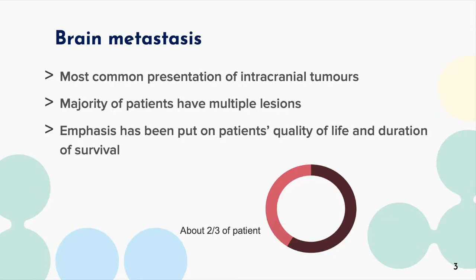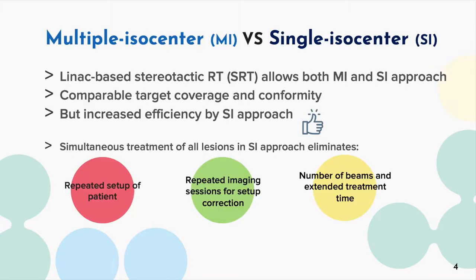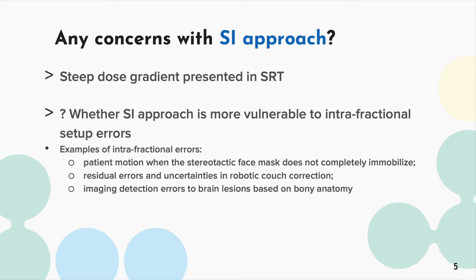Brain metastases are the most common presentation of intracranial tumors. Approximately two-thirds of patients were presented with multiple lesions. In LENA-based SRT, previous studies have demonstrated comparable dosimetric outcomes but improved efficiency by a single isocenter approach, instead of the typically used multiple isocenter approach. However, the difference in the extent of impact brought by intrafractional shifts to both approaches has not been fully evaluated.